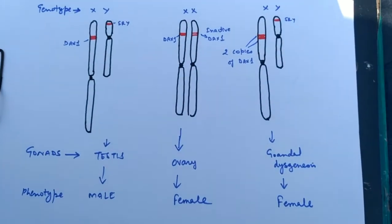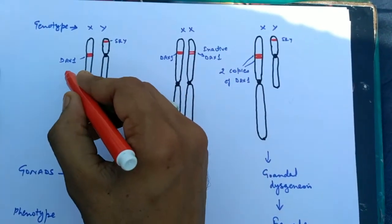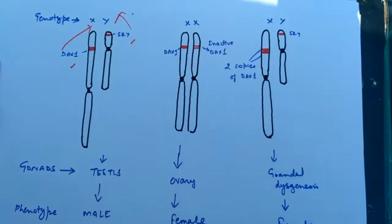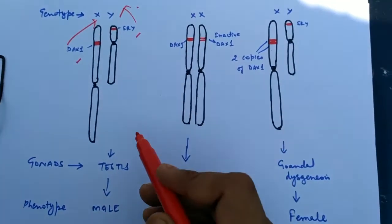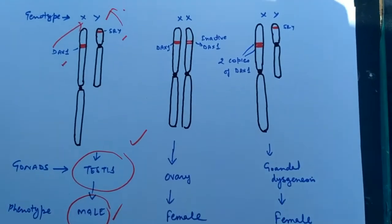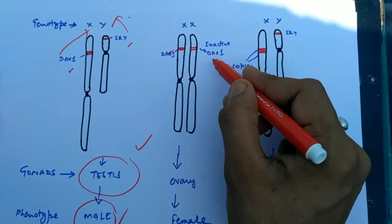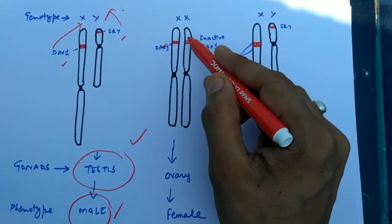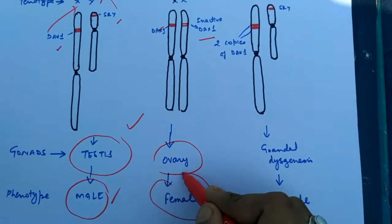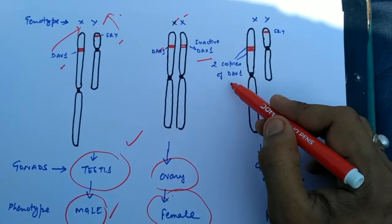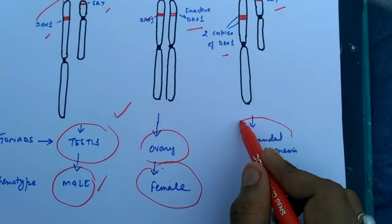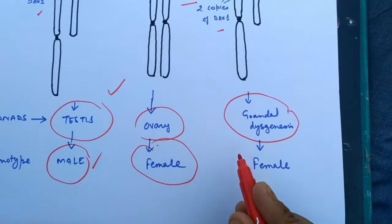Looking at the genotype of X and Y chromosomes: if DAX1 is on the X chromosome and SRY is on the Y chromosome, testes will be formed and the offspring will be male. If DAX1 is active on both X chromosomes and SRY is absent, ovaries form and the offspring will be female. If two copies of DAX1 are activated along with SRY on the Y chromosome, there will be gonadal dysgenesis and the individual will be a sterile female.